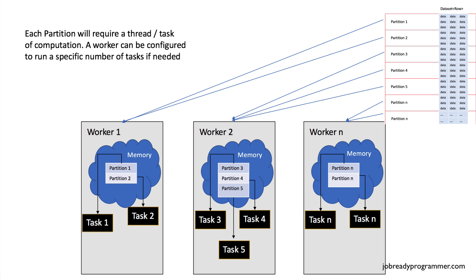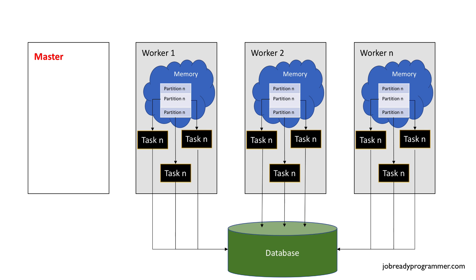In a real world application dealing with big data, there could be tens of thousands of partitions and thousands of threads running. These tasks represent the code that we wrote in the previous lecture. Each task is going to read a partition of the file, perform the transformations and filtering we specified in the code, and then each task will form a connection with the database and load its respective partition into the table. Most databases have restrictions on how many connections can be formed at one time, so in a real world environment we're going to be using connection pools for this.